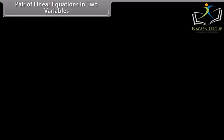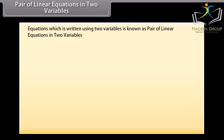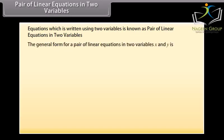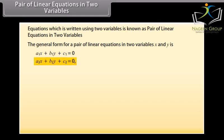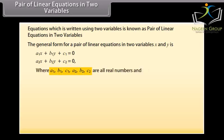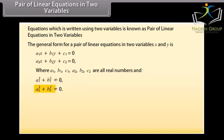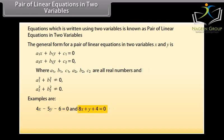Equations which are written using two variables are known as a pair of linear equations in two variables. The general form is: a1x + b1y + c1 = 0 and a2x + b2y + c2 = 0, where a1, b1, c1, a2, b2, c2 are all real numbers and a1² + b1² ≠ 0, a2² + b2² ≠ 0. Examples: 4x − 5y − 6 = 0 and 8x + y + 4 = 0; also x + y = 12 and 7 = y.